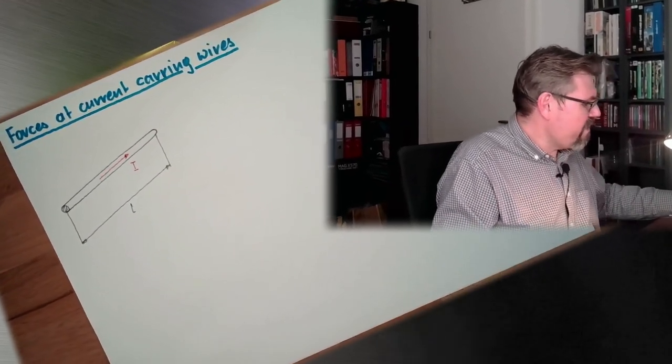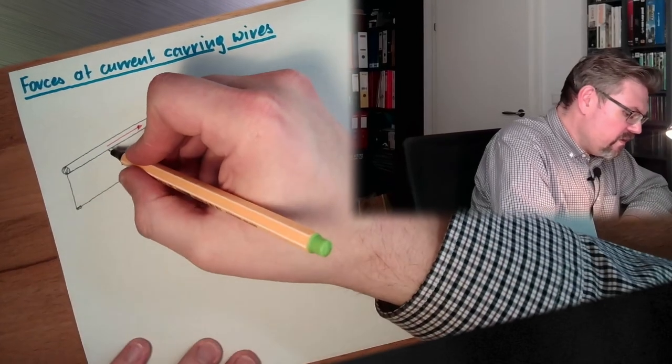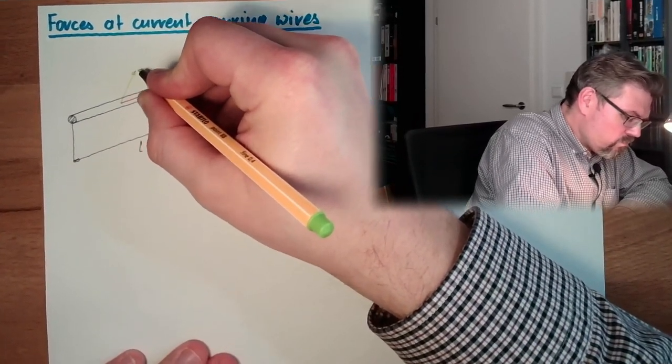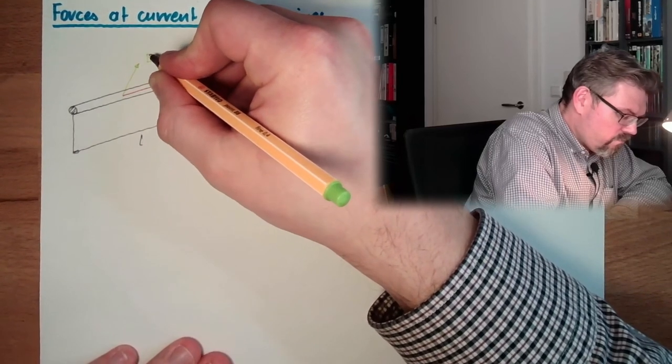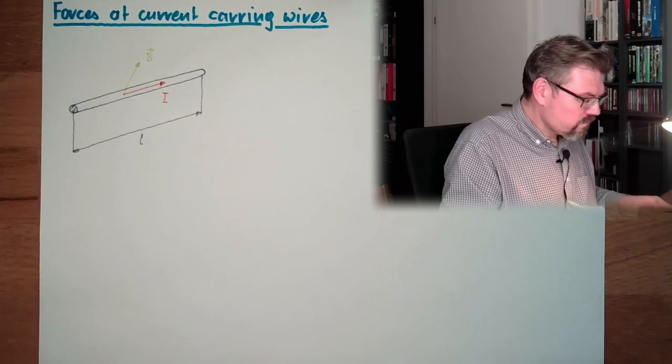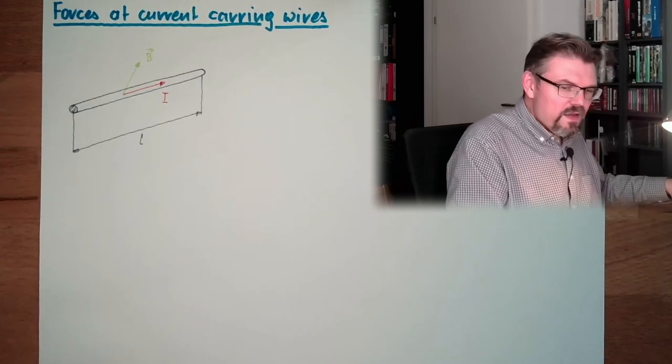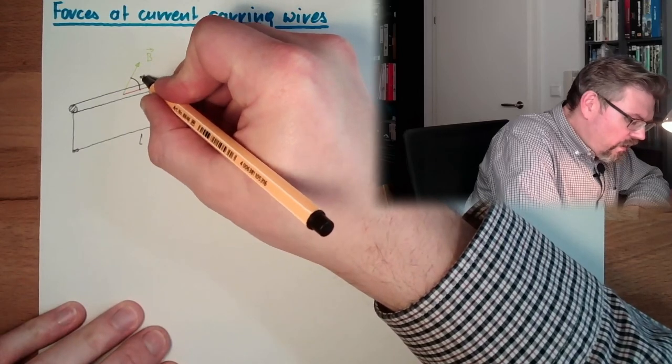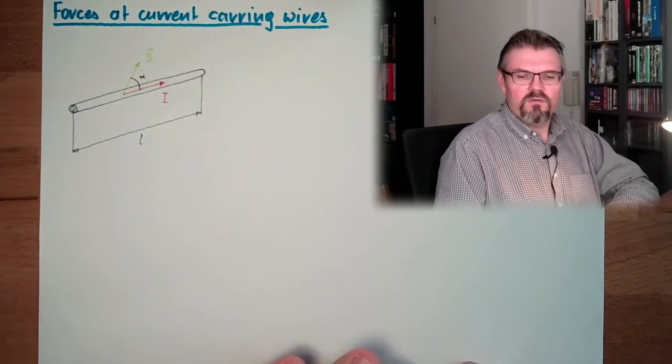And then we have our magnetic field, let's say this direction, B. It's a certain direction, this is our magnetic field. In between we have a certain angle, alpha, this time I call it alpha.